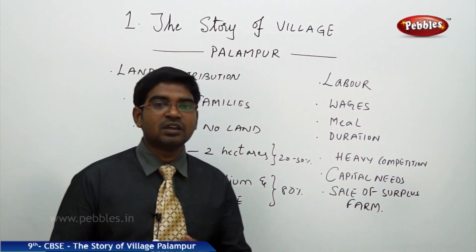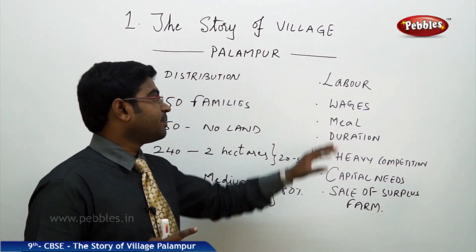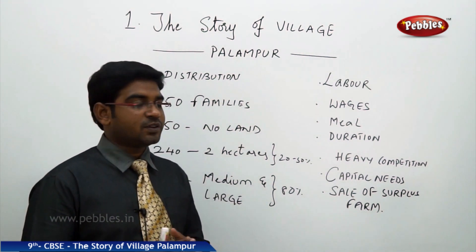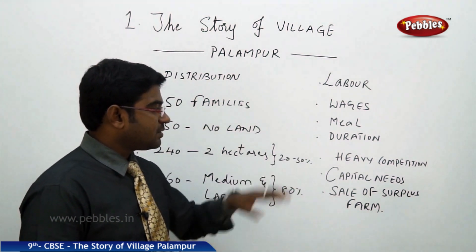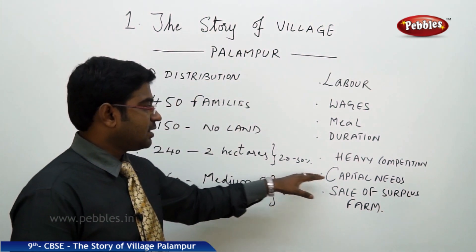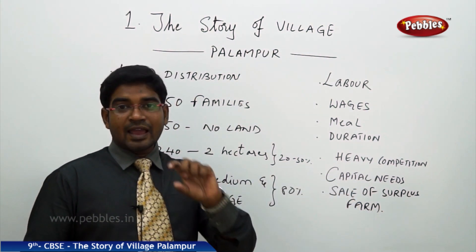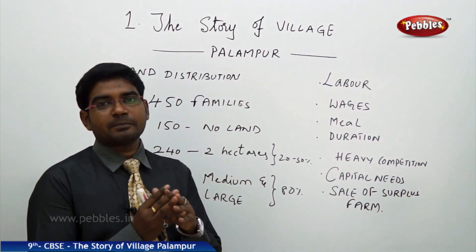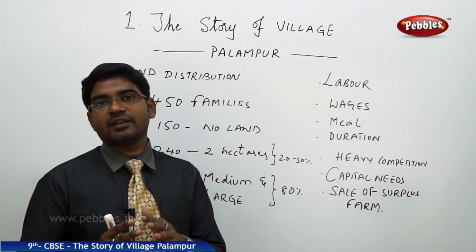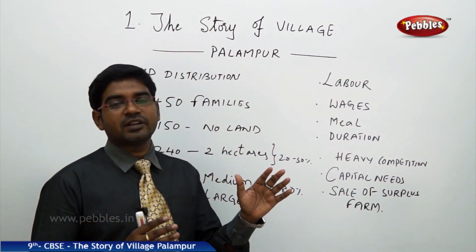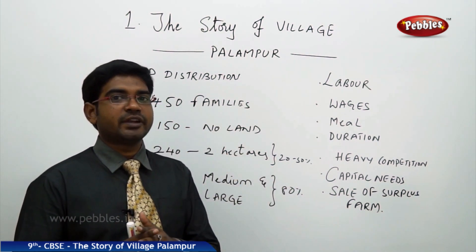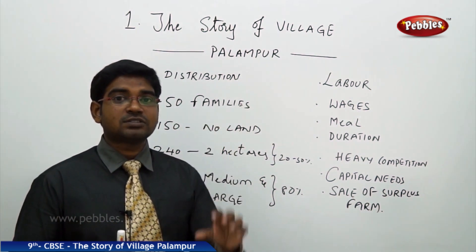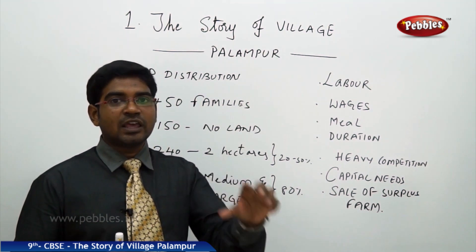Wages, duration, and heavy competition all make the life of labor very tough and difficult. Moving on to the other basic factor — capital needs. The cost of farming has increased many times when compared to traditional methods versus the green revolution type. In many areas, green revolution techniques are now being followed, so the cost of production has increased a lot.